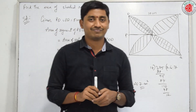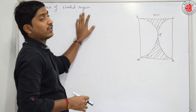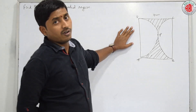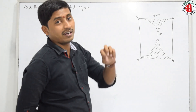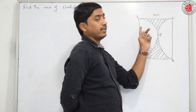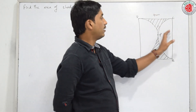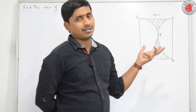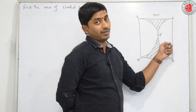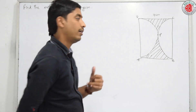Look at the next question. Again, he is asking us to find the area of the shaded region. We don't know any formula except area of a square, circle, segment, and sector. Here ABCD is a square of 7 centimetre side, and these are two semicircles. We are going to subtract these two areas of semicircles from the area of the square.